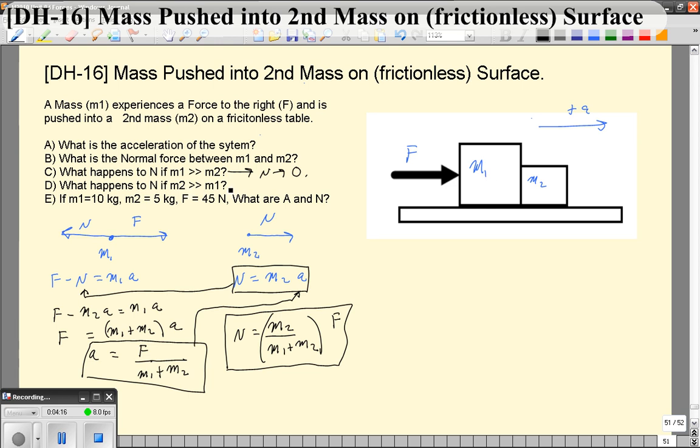Similarly, if M2 is much bigger, if this is huge and you end up with something really small, effectively 0 plus huge, you get elephant over elephant gives you 1 and that's going to mean that the normal force is going to be approximately the same size as the force you're pushing. It's a teeny tiny bit smaller, but not much.